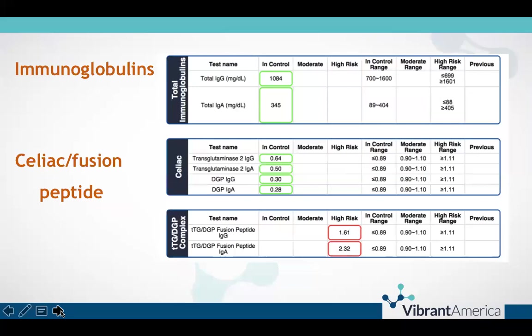The Wheat Zoomer starts off with total immunoglobulins so that you can assess whether the patient has a great enough pool of immunoglobulins present to measure their reactivity to the antigens tested, and then tests for overt celiac disease through traditional serological markers of transglutaminase 2 and deamidated glide and peptide. We then have Vibrance's proprietary TTG-DGP fusion peptide, which is an early marker for celiac disease, elevating anywhere from 14 months to 4 years before traditional serological markers do.